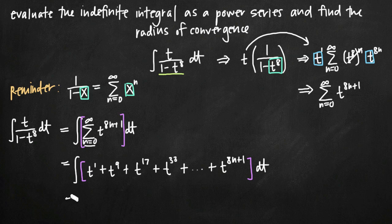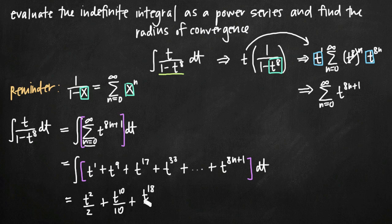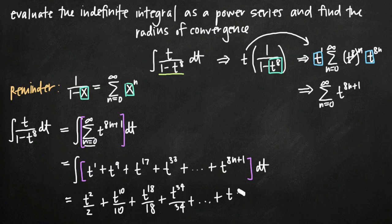Now taking the integral, we integrate one term at a time using the power rule — adding 1 to the exponent and dividing by the new exponent. So t to the first becomes t squared over 2; t to the 9th becomes t to the 10th over 10; t to the 17th becomes t to the 18th over 18; t to the 33rd becomes t to the 34th over 34. For the general term t to the 8n plus 1, adding 1 gives 8n plus 2, so we get t to the 8n plus 2 divided by 8n plus 2. Then we add C for the constant of integration.